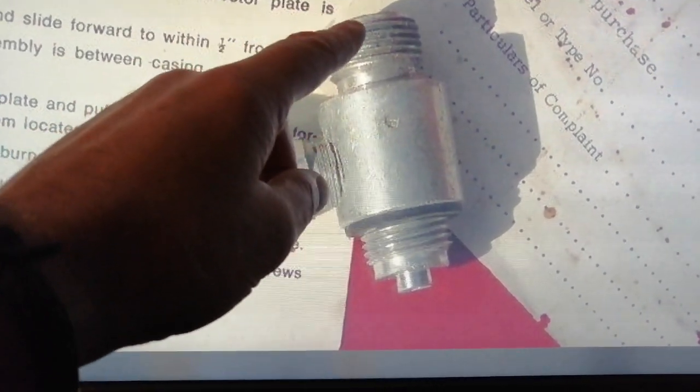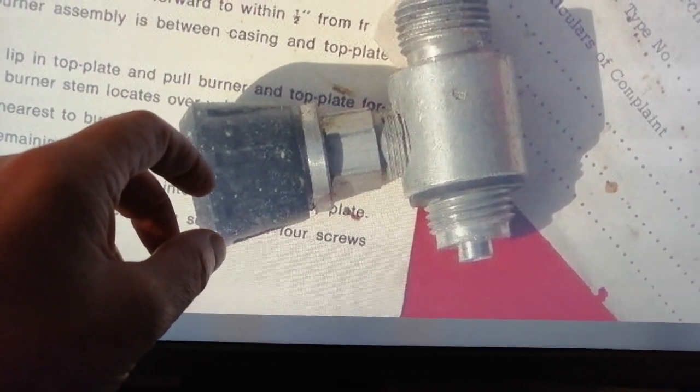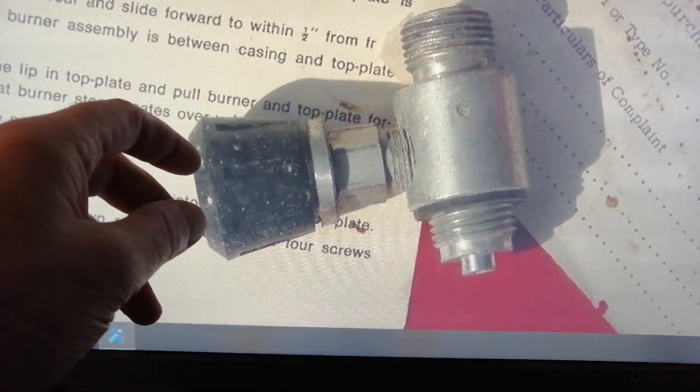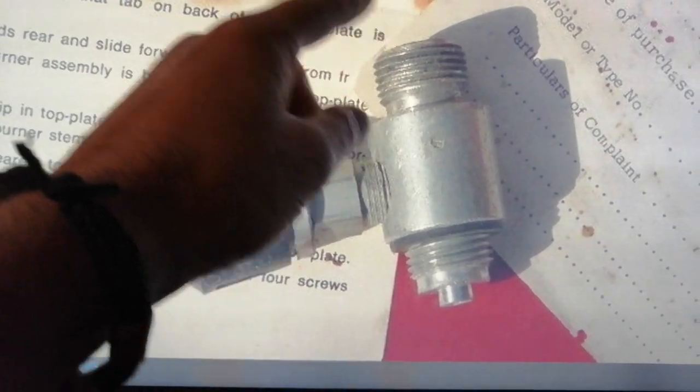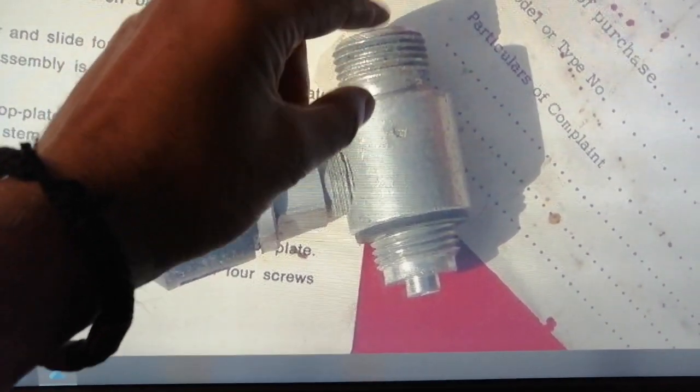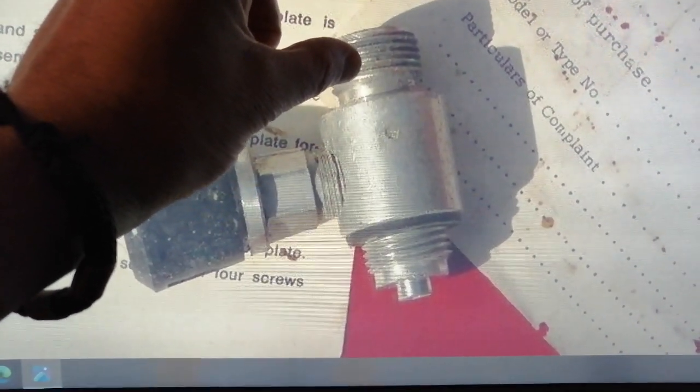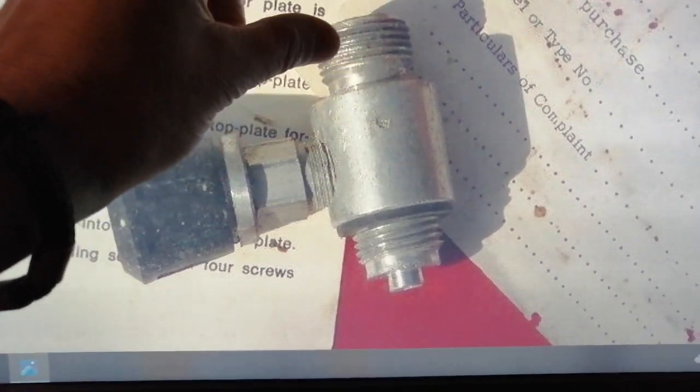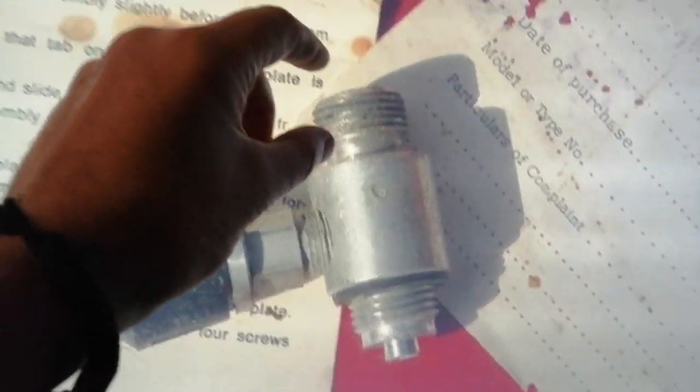But if this thread's different to your pipe, what you could do is get somebody to make a connector that'll connect to your pipe and connect to this pipe. Someone will be able to do that for you.